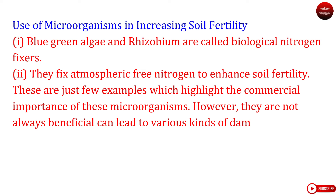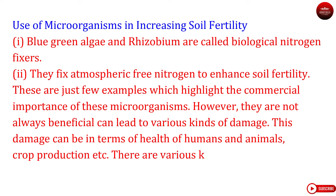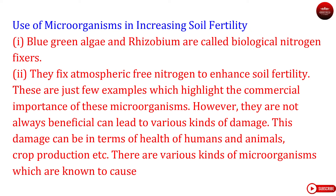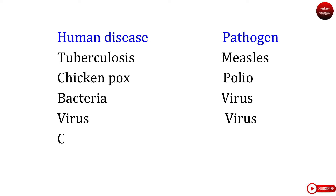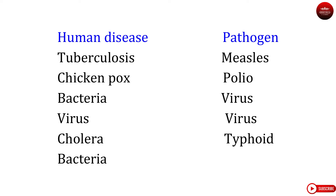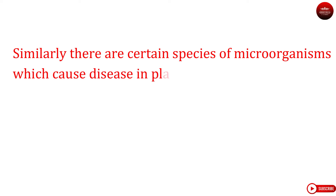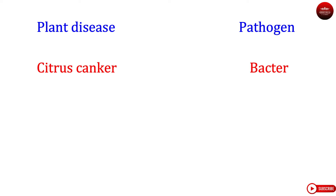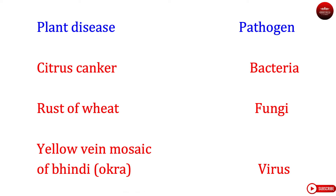These are just a few examples which highlight the commercial importance of these microorganisms. However, they are not always beneficial and can lead to various kinds of damage in terms of health of humans and animals, crop production, etc. Various microorganisms are known to cause disease in humans and animals. Human diseases and their pathogens include: tuberculosis, measles, chickenpox, polio caused by bacteria or virus; cholera and typhoid caused by bacteria.